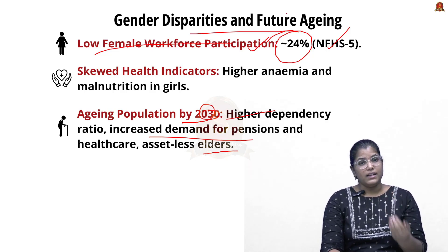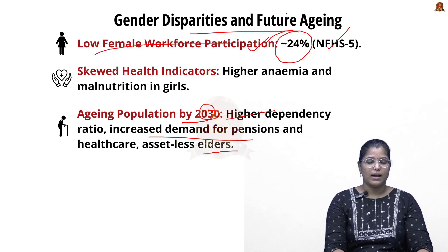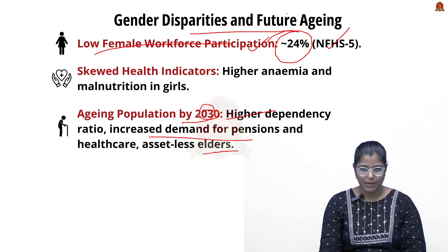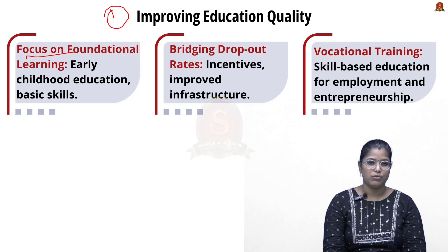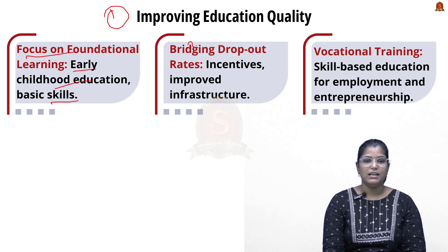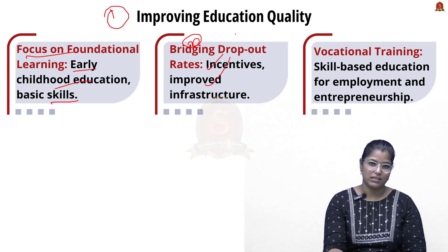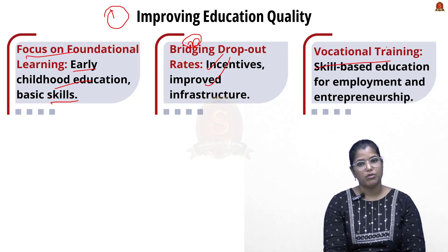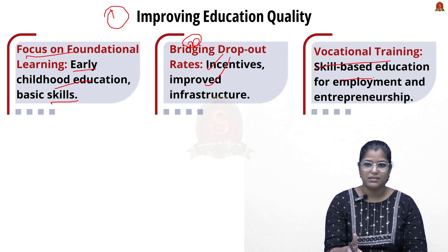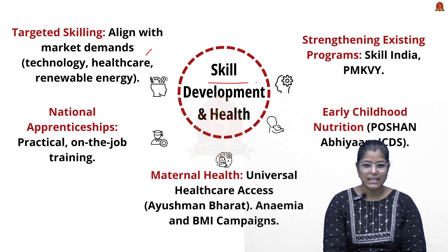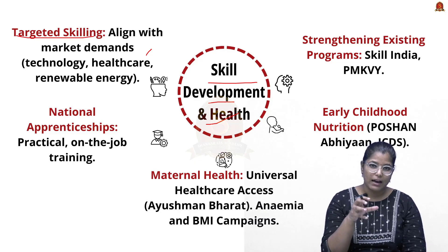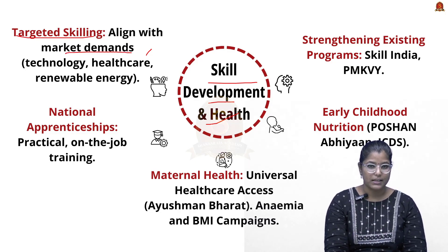On the way forward, the first priority is improving education quality by focusing on foundational learning, early childhood education, and basic skills. The dropout rate must be reduced through incentives and improved infrastructure. Vocational training and skill-based education for employment and entrepreneurship should be promoted at the school level itself. For skill development, targeted skilling aligned with market demands — especially in technology, healthcare, and renewable energy — is essential, with AI-enabled education and awareness playing a key role.